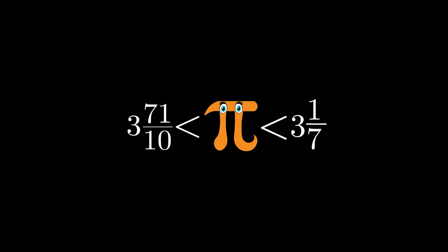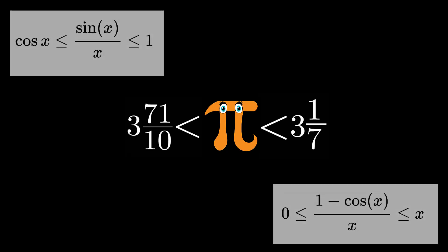Archimedes' result, stated earlier, is modern in outlook, precisely because it is phrased as an inequality. When mathematicians are faced with quantities which are hard to estimate or compute, they try at least to pin them in between two other quantities which they can compute.